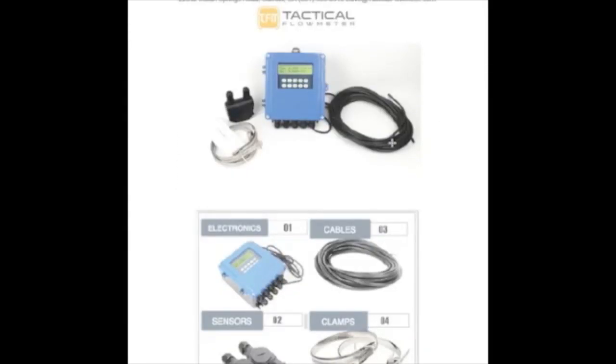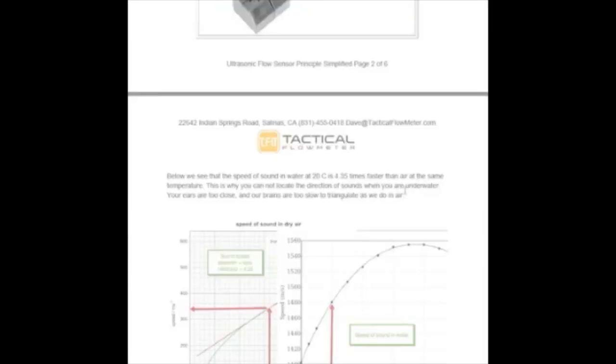This is what an ultrasonic clamp-on looks like. It consists of some electronics, cables that connect the electronics to the sensors, and the clamps that hold the sensors to the pipe on the outside of the pipe.